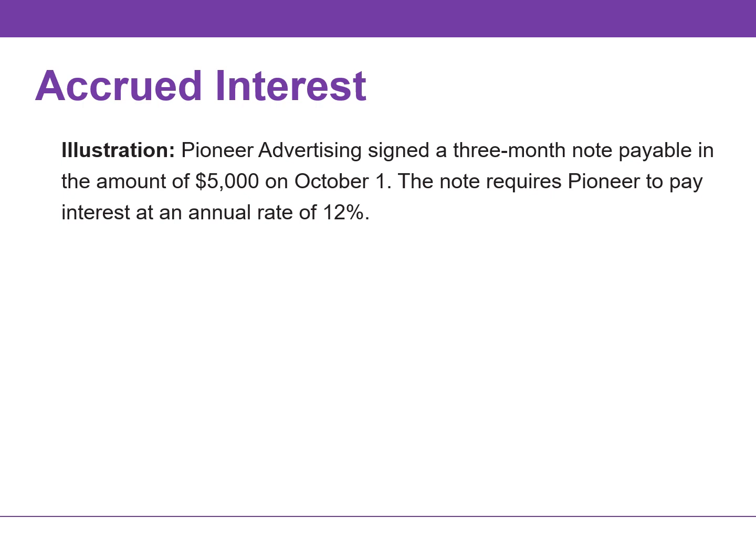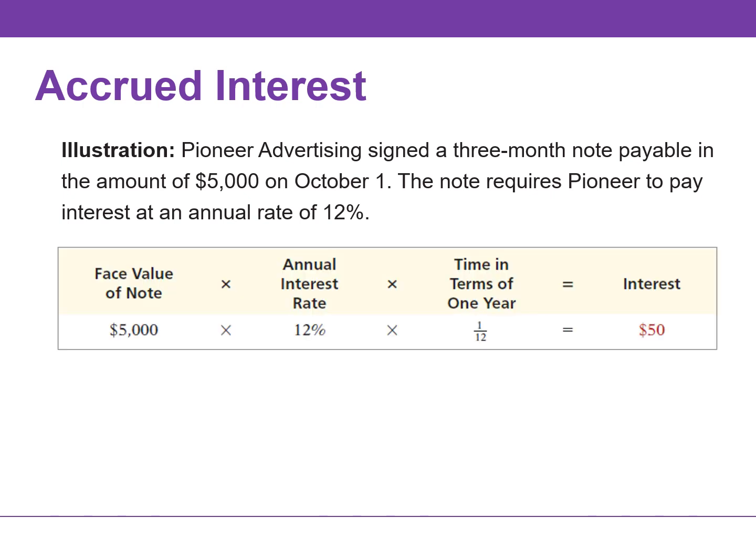Pioneer signed a 3-month note payable in the amount of $5,000 on October 1st. The note requires Pioneer to pay interest at an annual rate of 12%. The amount of interest recorded is determined by three factors: the face value of the note, the interest rate — which is always expressed as an annual rate — and the length of time the note is outstanding. The total interest due on the $5,000 note at its maturity date, three months in the future, is $150, or $50 for one month.